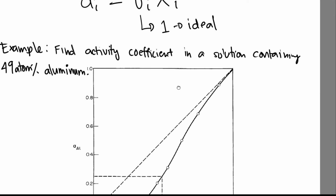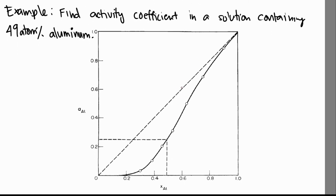Let's take an example for the activity coefficient. This graph shows the activity of aluminum in a solid solution — specifically a copper solution. We're looking to find the activity coefficient of aluminum when the mole fraction (atomic fraction) of aluminum is 49 atom percent. At 49 atom percent aluminum, we read the activity from the graph, which is around 0.255.